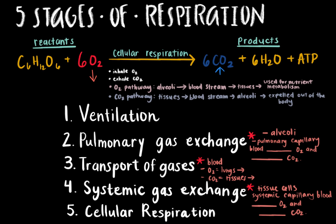Now let's review the five stages of respiration. Stage one: ventilation, which simply refers to breathing — inhaling oxygen and exhaling carbon dioxide. Stage two: pulmonary gas exchange, which occurs at the alveoli where pulmonary capillary blood gains oxygen and loses carbon dioxide. Stage three: transport of gases through the blood — blood carries oxygen from the lungs to the tissue cells and carbon dioxide from the tissue cells to the lungs. Stage four: systemic gas exchange, which occurs at the tissue cells where systemic capillary blood loses oxygen and gains carbon dioxide. Stage five: cellular respiration — cells consume oxygen and give off carbon dioxide as a result of the citric acid cycle and electron transport chain.